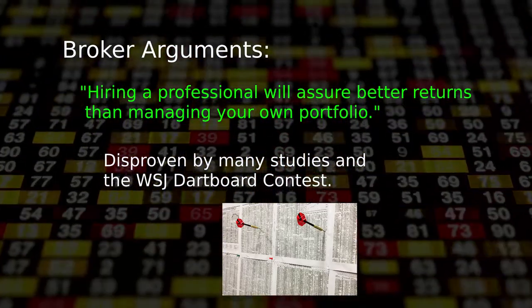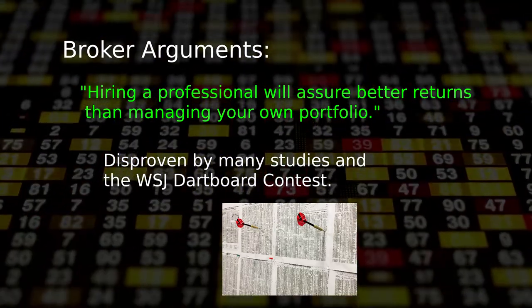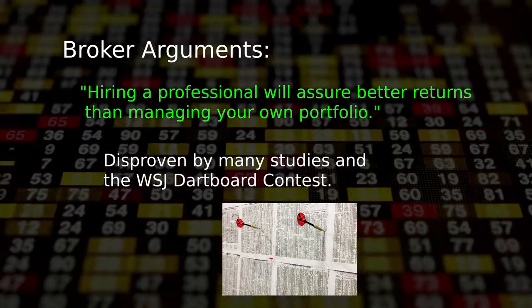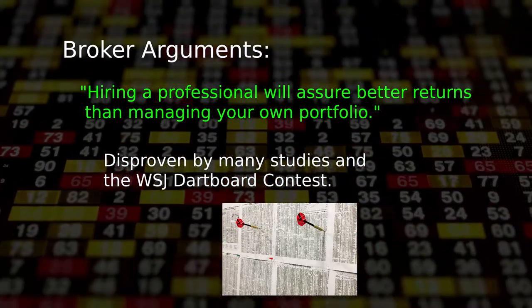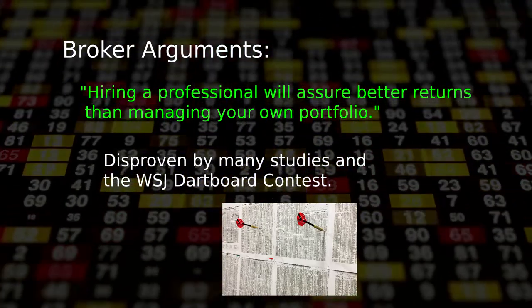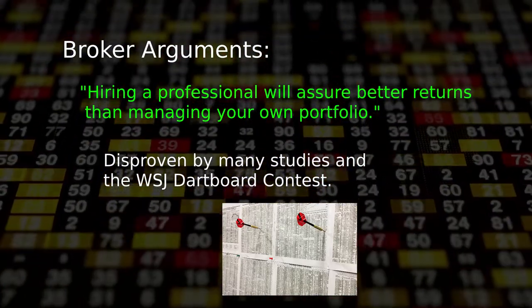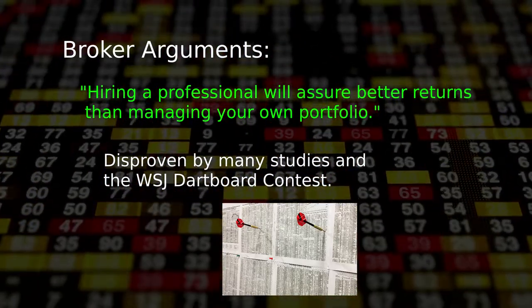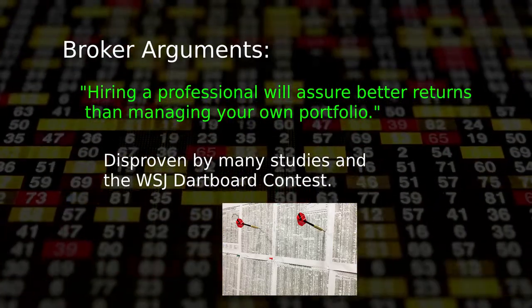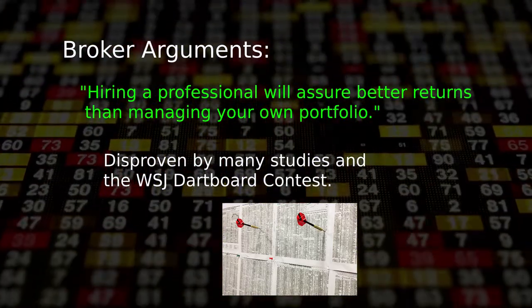In the contest, Wall Street Journal reporters threw darts at a list of stocks and tracked the price of the stocks the darts hit by chance. Over the years, the professionals' picks came out a bit ahead of the dartboard stock list, but this likely resulted from the so-called announcement effect.